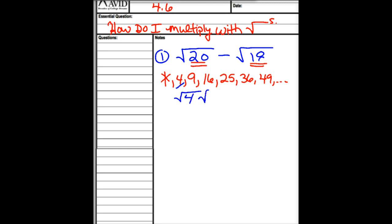So we break it into root 4 times root 5. Is there a perfect square hiding in 18? Do not tell me 3 times 6. Those are not in our list of besties. I'm going to break it into root 9 because that's a perfect square. So I clean this up and get 2 root 5 minus 3 root 2. Once I get down here, I cannot subtract those because they are not like roots. So this would be done.